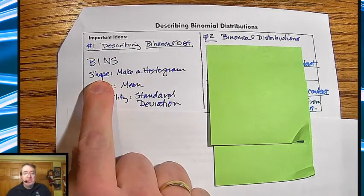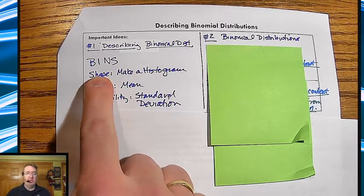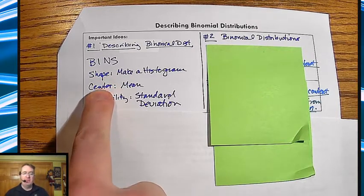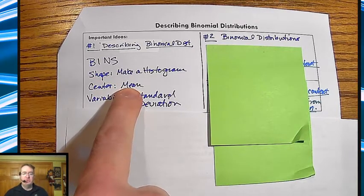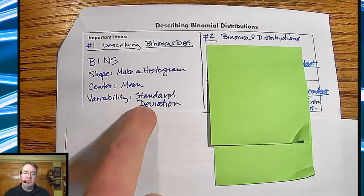For shape, make a histogram of it. And probably one of your staplets is probably going to be the easiest way to do that quickly. Center, you're going to use the mean. And then for variability, standard deviation.